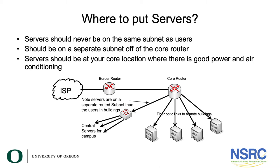The right place to put your servers is in your core location. Servers should never be on the same subnet as any user, and so they need to be on a separate subnet off the core router, in that same room as your core router where you have good power and good air conditioning. A typical design is simply to have an interface off your core router that goes to a switch that has your servers.